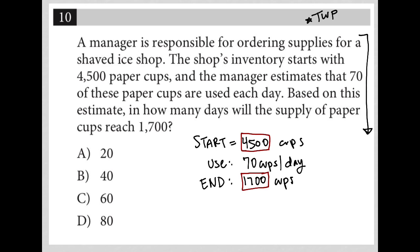How much of a decrease is that? Well, I can just find the difference between 4,500 and 1,700. Of course, you can use your calculator here. And that number is 2,800.